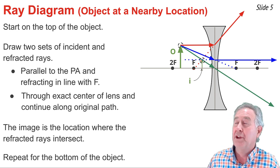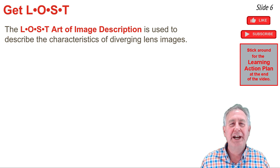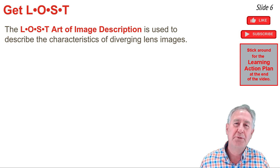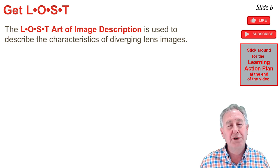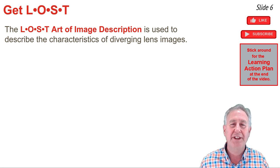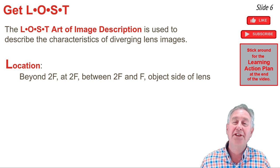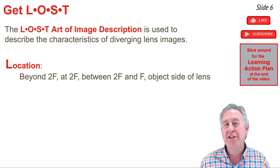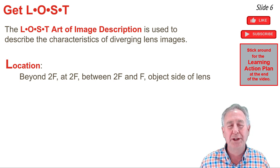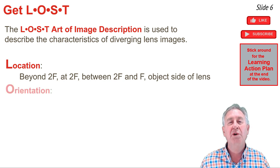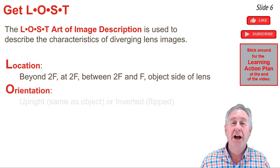Now that we've drawn two ray diagrams, let's describe the characteristics of images produced by diverging lenses. I use the so-called LOST art of image description, where each letter of LOST refers to an attribute of the image. The L of LOST refers to the location of the image — options include on the opposite side beyond the 2F point, at the 2F point, between F and 2F on the opposite side, or on the object side of the lens.